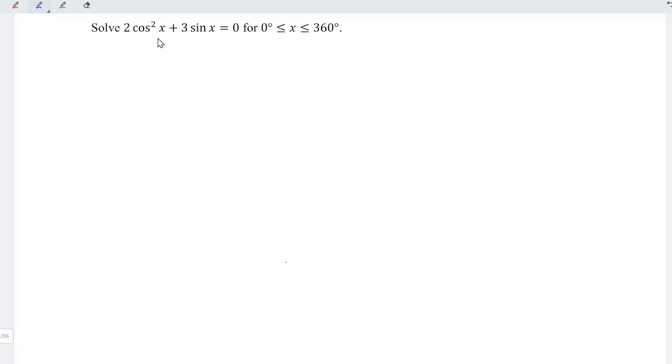I'm going to convert all to a sine function by using the particular identity. So we should have 2 times 1 minus sine squared x plus 3 sine x is equal to the right-hand side, which is 0.